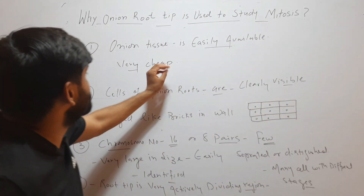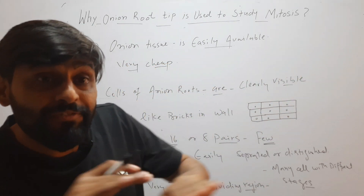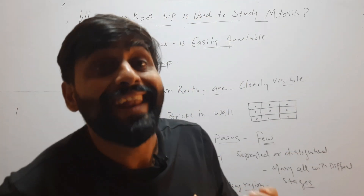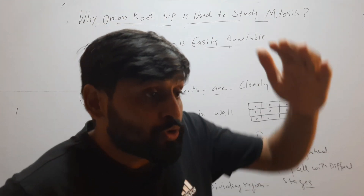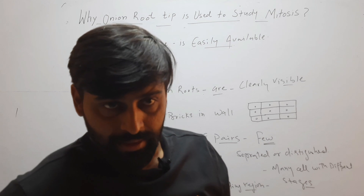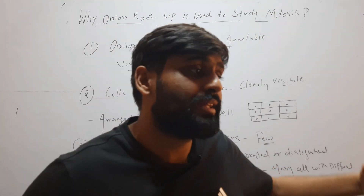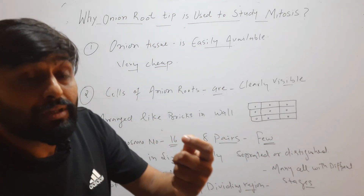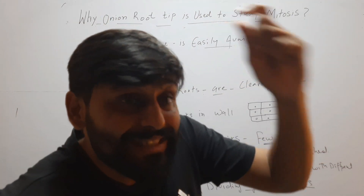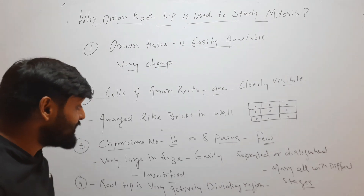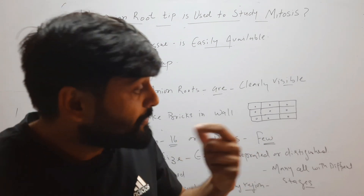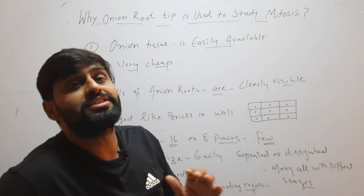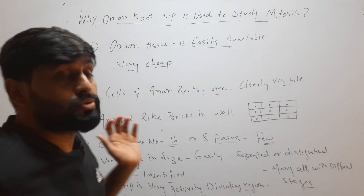So these are the reasons why onion root tip is used to study mitosis: onion tissue is easily available and very cheap; cells of onion roots are clearly visible and arranged like bricks; chromosome number is low — eight pairs — so chromosomes can be easily identified and are large in size so they can be easily located; and the root tip is a very actively dividing region where you will find cells at different stages of mitosis.